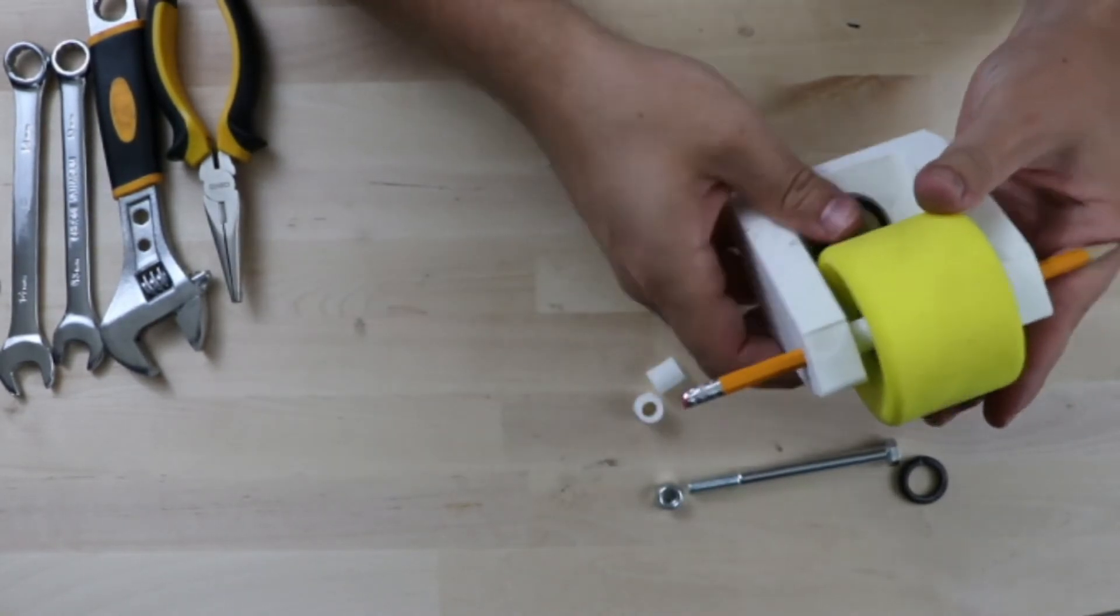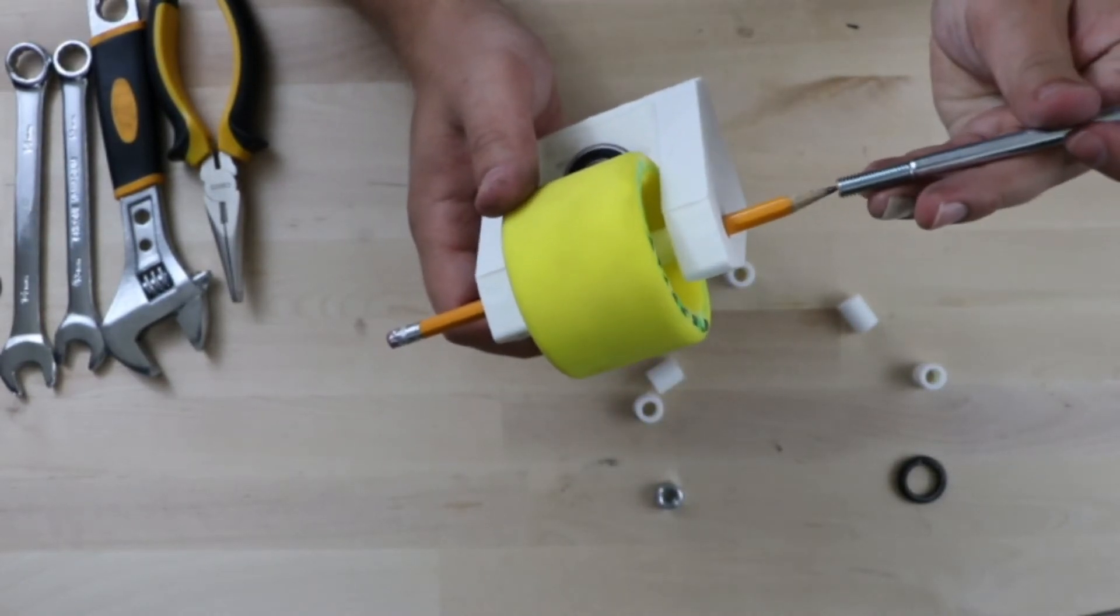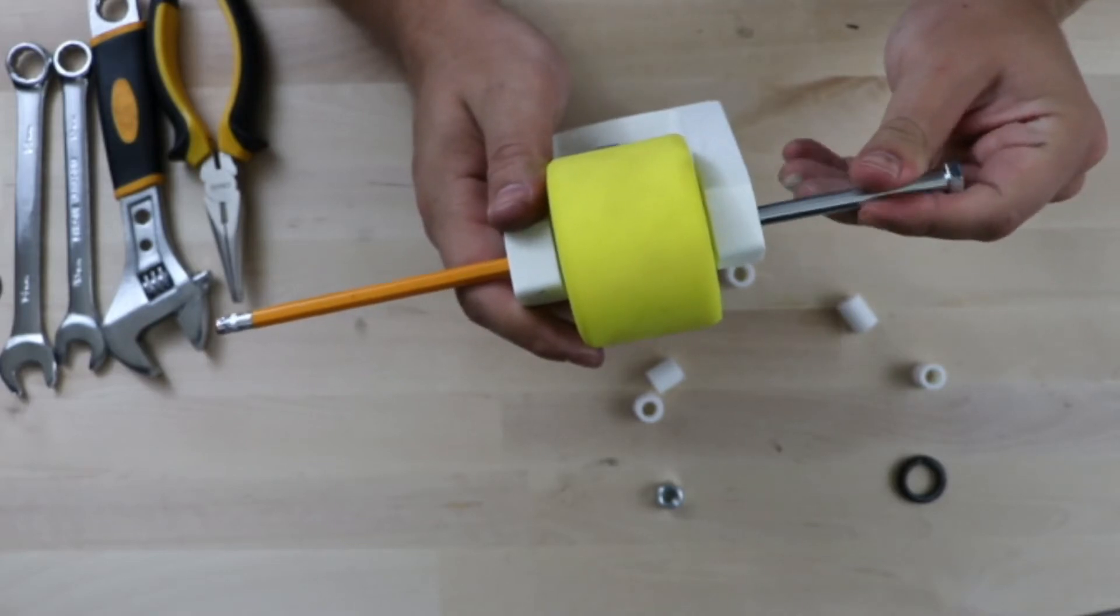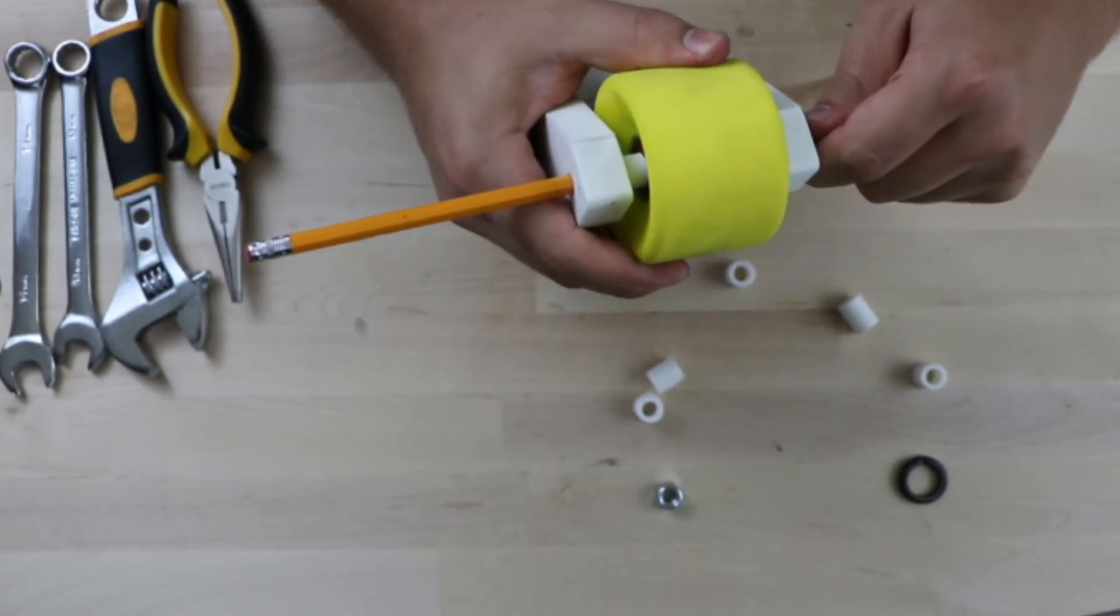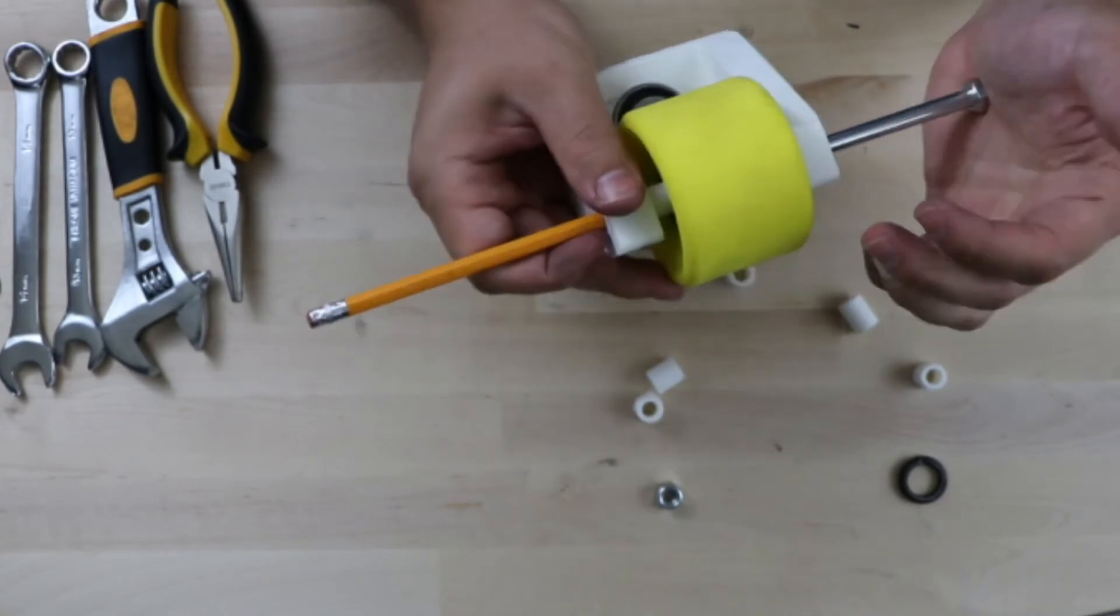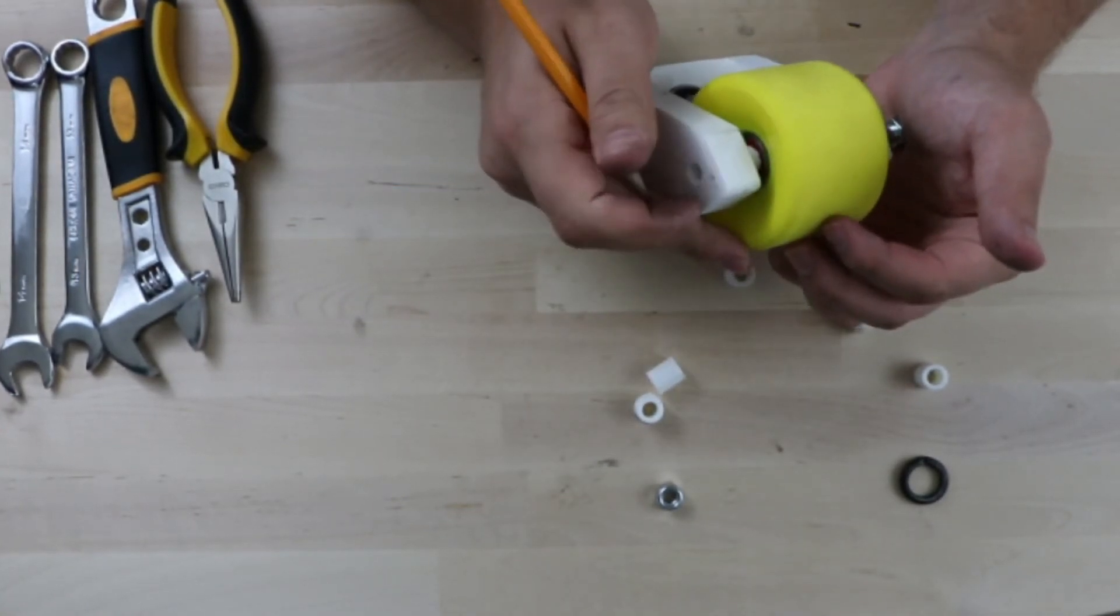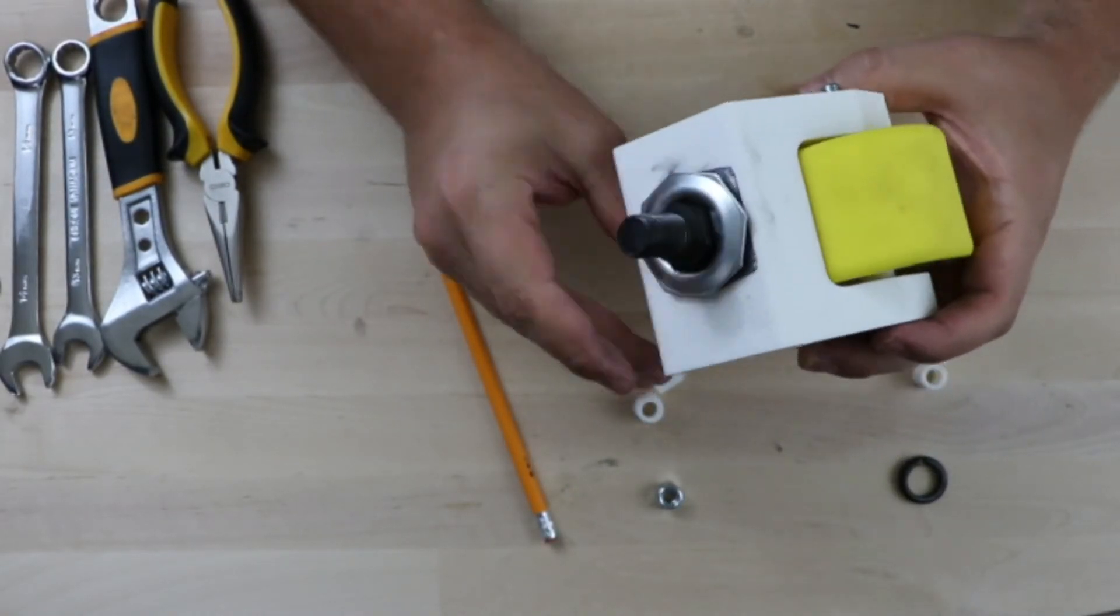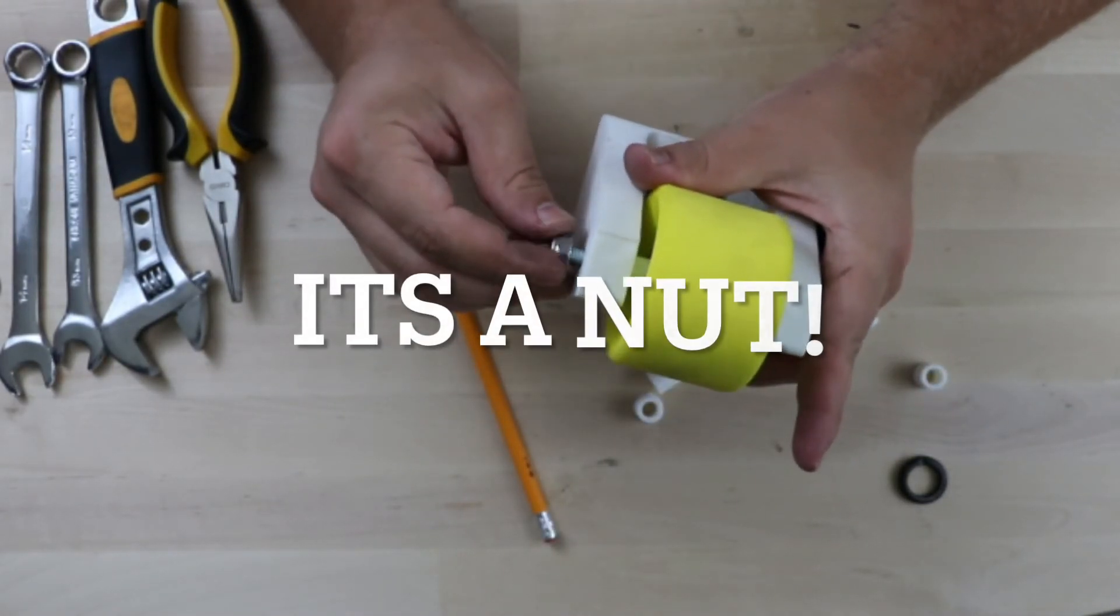There we go. Then we'll take our bolt, so we'll push our bolt from one end to the other with the pencil. Of course we're going to get stuck a little bit, wiggle it around. Use some force, and there we go, perfect.